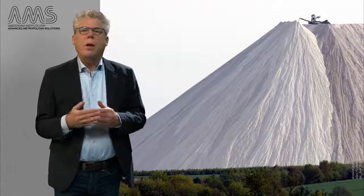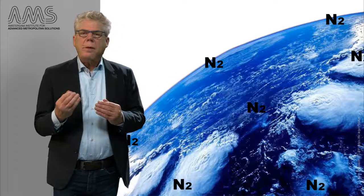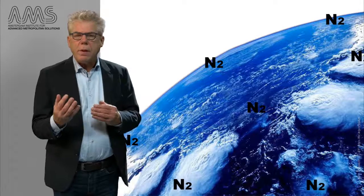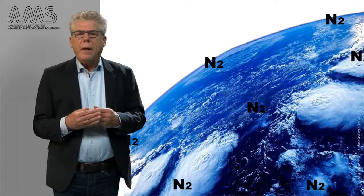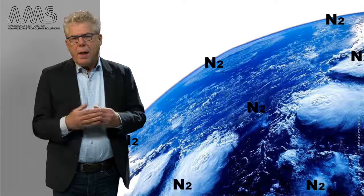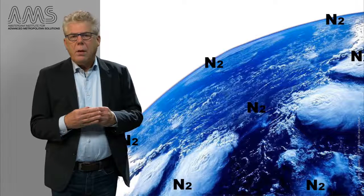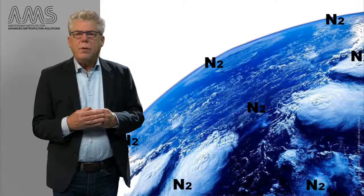For potassium this is not so much of a problem, as it is abundant in the earth's crust. Similarly, nitrogen is abundant in the atmosphere and can be fixed from the air via natural processes or through man-made technologies, also known as the Haber-Bosch process. This chemical process produces nitrogen fertilizers from atmospheric nitrogen, which is then applied to agricultural land, but it requires a lot of energy and fossil fuels.